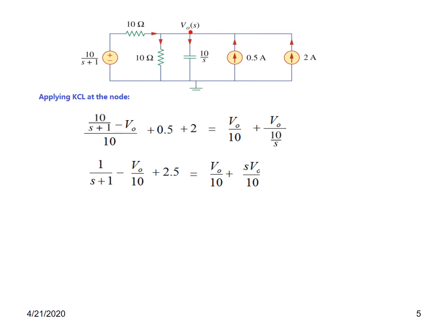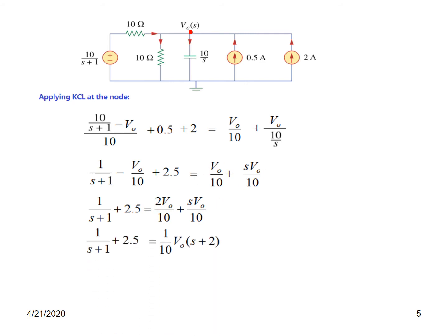Simplifying: 10 divided by 10 gives 1/(s+1), minus v_naught/10, plus 2.5. Moving v_naught terms to the other side: we get 2·v_naught/10 plus s·v_naught/10. Taking 1/10·v_naught common, then multiplying both sides by 10, the equation simplifies further.